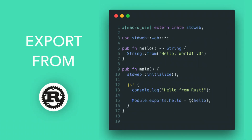Now, how do you export your functions? The good news is, you can write JavaScript directly in Rust. So you can do console.log from Rust, you can do module.export from Rust, and anything really. You can modify the DOM, you can modify the canvas, and it will call out to JavaScript just for you.